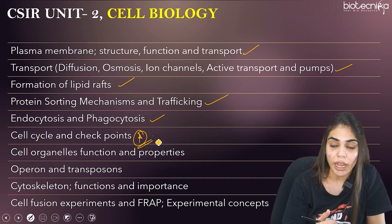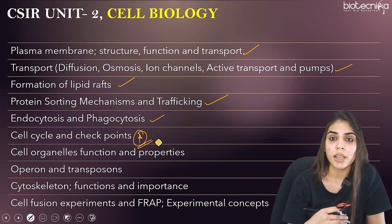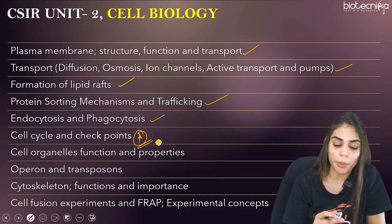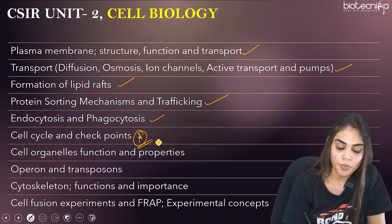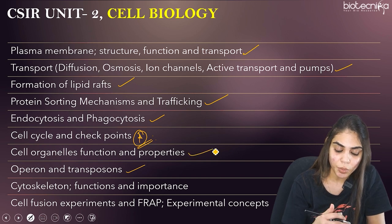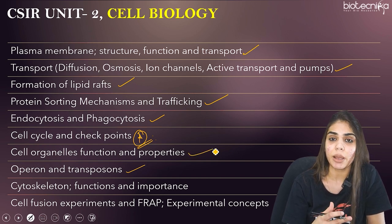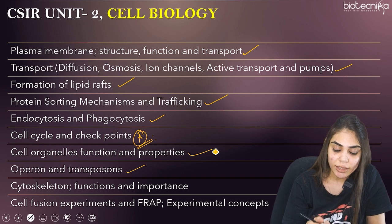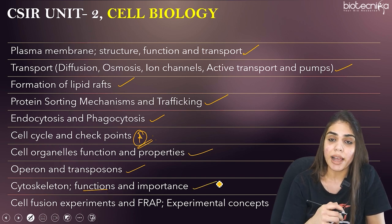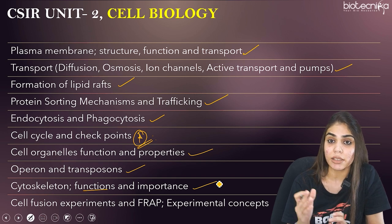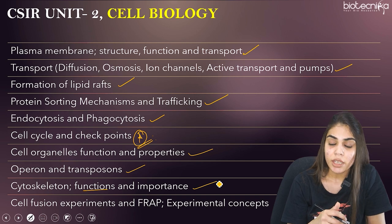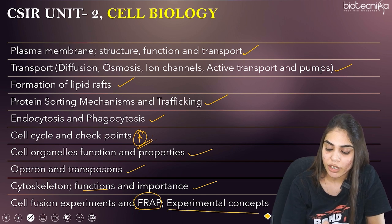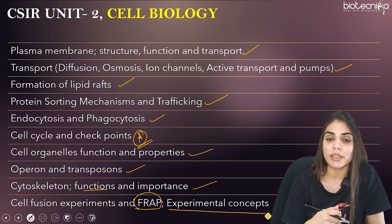The next is cell organelle function and properties. Know every function of cell organelles, as direct questions are asked in Part B. Also cover operons and transposons, and cytoskeletal components — actin filaments, intermediate filaments, microtubules, and microfilaments. Have a thorough idea of cytoskeleton functions and importance. Also learn cell fusion experiments and FRAP experiments — for example, if G1 phase is combined with S phase — along with FRAP profiles and experimental concepts.